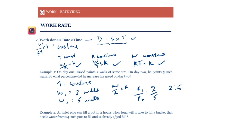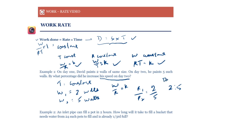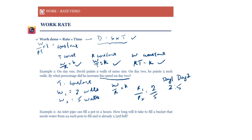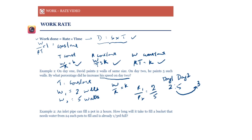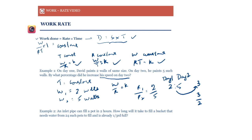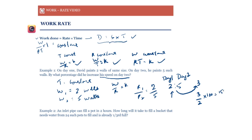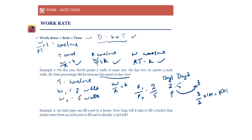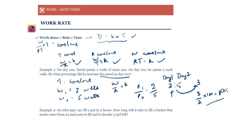By what percentage did David increase his speed on day two? His speed on day one was 2 in ratio terms and on day two it was 5, so he increased by 3. The percentage increase is 3 divided by 2, times 100 — giving us 150%. So he increased his speed by 150%. Since percentages don't depend on actual values, we can find them using just the ratios.